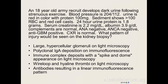Case: An 18-year-old develops dark urine following strenuous exercise, very high blood pressure, red urine, minimal proteinuria (1.8 grams), RBC casts, creatinine 2.2, albumin 3.9 — this is nephritic syndrome. ANA negative, ANCA negative, anti-GBM positive. On kidney biopsy you would see the linear immunofluorescence pattern — consistent with anti-GBM disease/Goodpasture's.